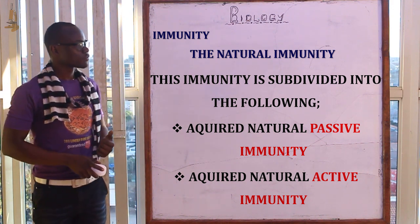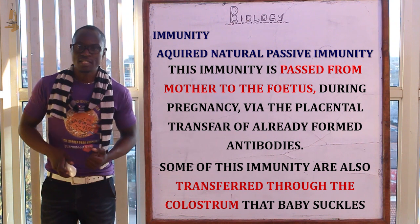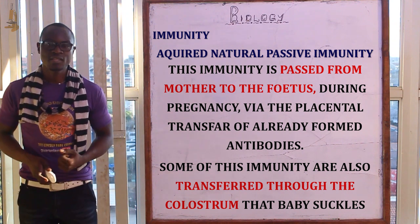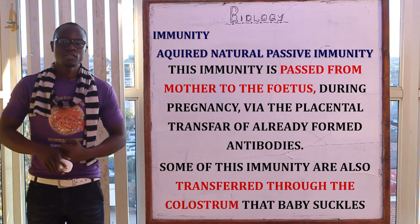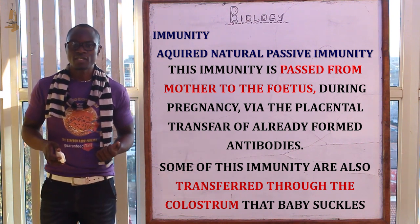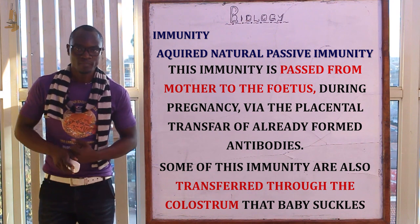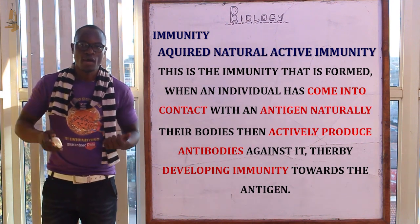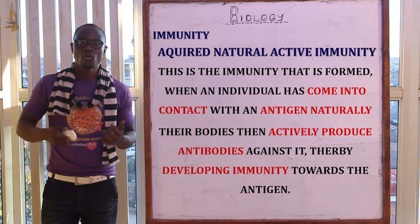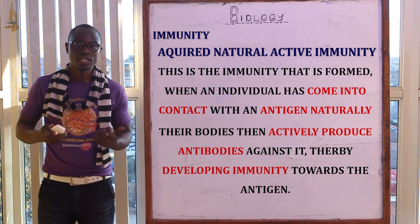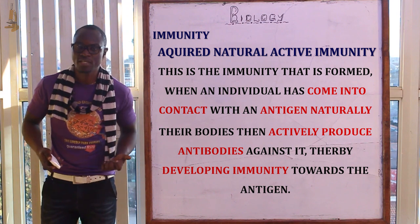Acquired natural passive immunity is the immunity passed from the mother to the fetus via the placental transfer of already-formed antibodies from the mother to the fetus. Some antibodies are also transferred through colostrum, the first milk that the infant receives from the mother. Acquired natural active immunity is formed when an individual comes into contact with an antigen naturally and the body actively produces antibodies against it.